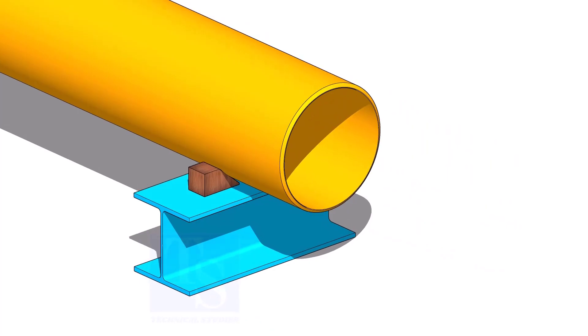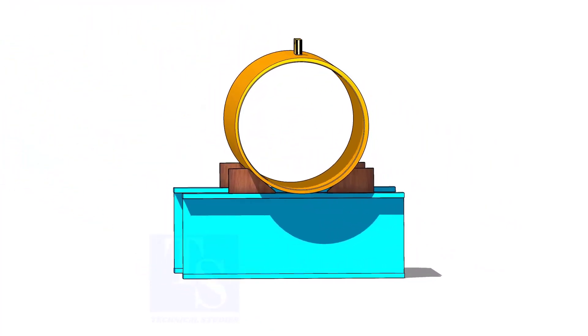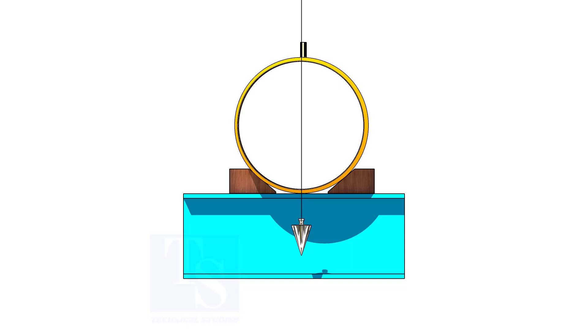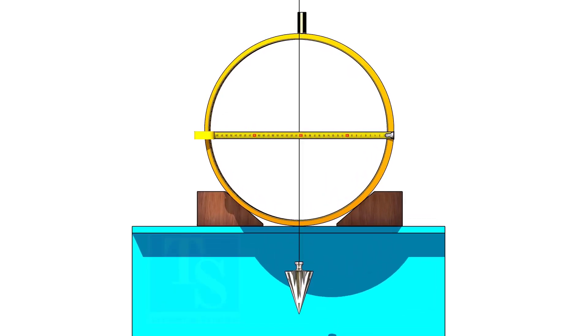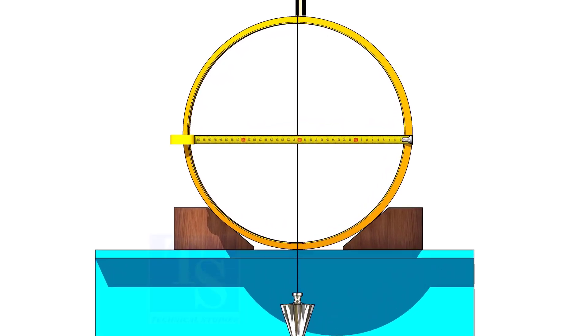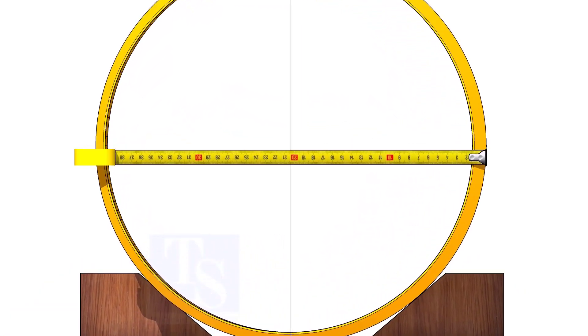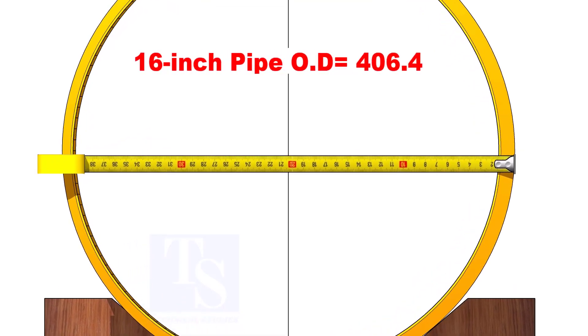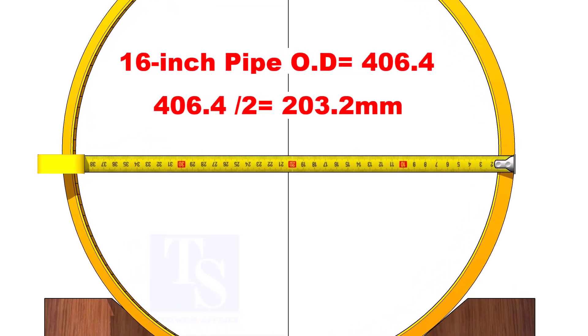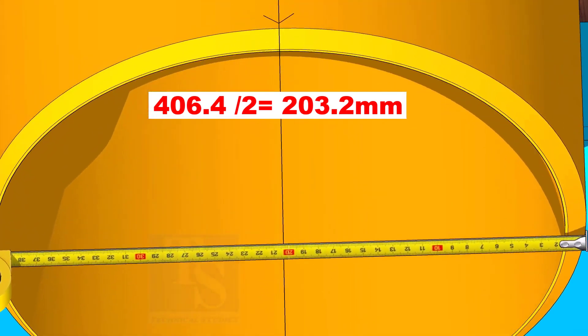Put a plumb at the center of the pipe. Adjust the plumb to the half diameter of the pipe. This is a 16-inch pipe. OD of a 16-inch pipe is 406.4 millimeters. Mark the point where the half OD, 203.2 millimeters, reaches.